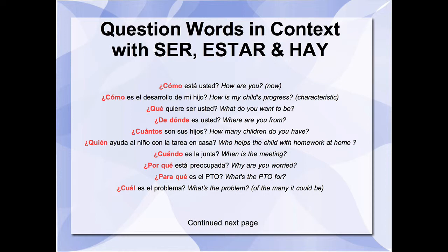Repeat after me. ¿Cómo está usted? — Estar is used here because it's asking about feelings. How are you? ¿Cómo está usted? ¿Cómo es el desarrollo de mi hijo? — How is my child's progress? Here we're using the verb ser because the question refers to a characteristic — how is it? Is his progress good, bad, indifferent? ¿Cómo es?